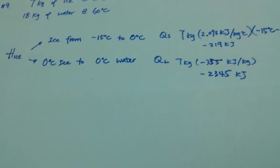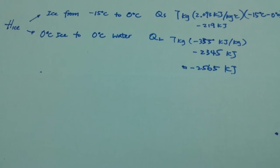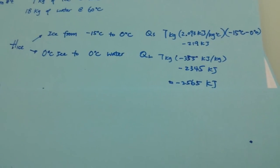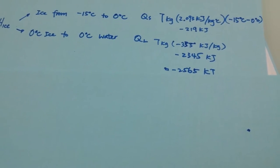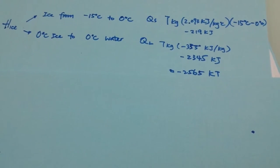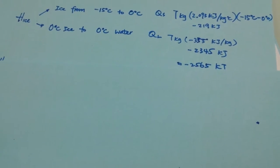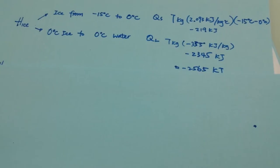And now we can add them together. And the total heat enthalpy or the heat that is needed to go from the negative 15 degrees Celsius ice to zero degrees is negative 2,500 roughly.